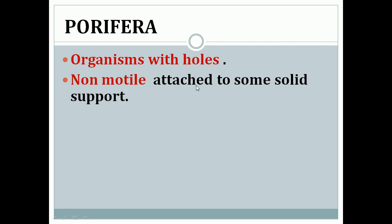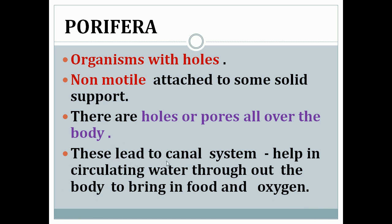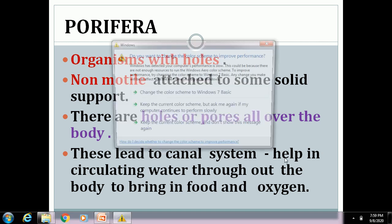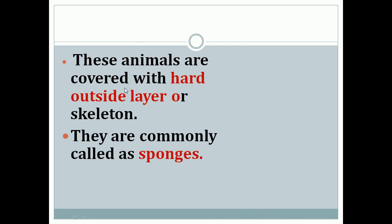Porifera organisms are non-motile — they cannot move. They attach to some solid support. There are holes or pores all over the body, which lead to a canal system — a continuous system that helps in circulating water throughout the body to bring food and oxygen inside the body. These animals have a very hard outer layer, like a skeleton, and they are commonly called sponges.